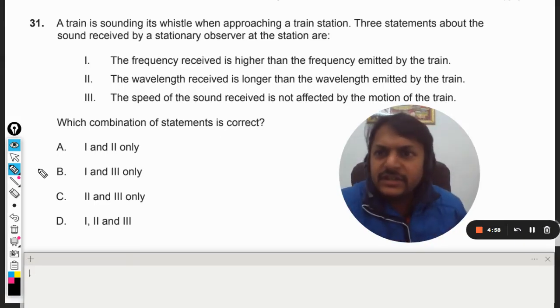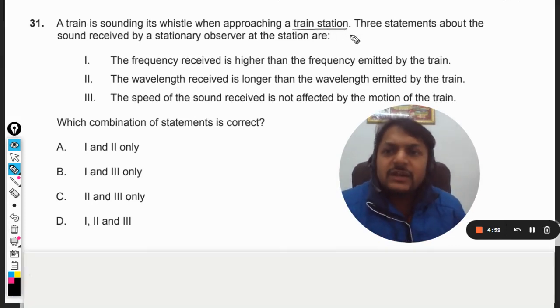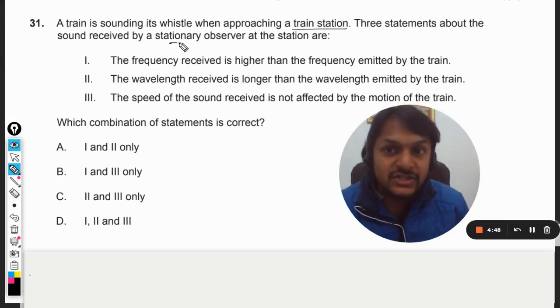Okay dear students, let us see what is there in this question. A train is sounding its whistle when approaching a train station. Three statements about the sound received by a stationary observer at the station are, so number one...